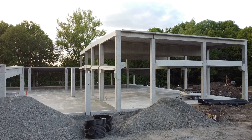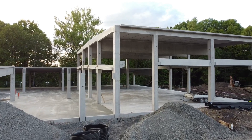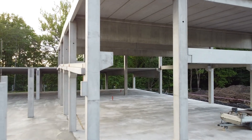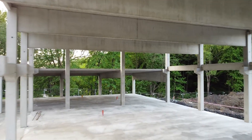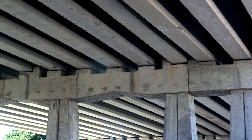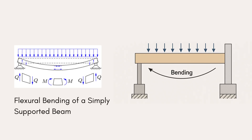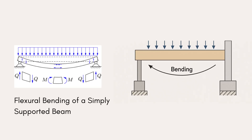A beam is a horizontal structural element primarily designed to resist bending, also known as flexure, due to applied loads. In structural engineering terms, all beams are flexural members, meaning their main function is to transfer loads through bending action to the vertical supports like columns or walls. But beams can serve different roles based on where they are located in a structure.